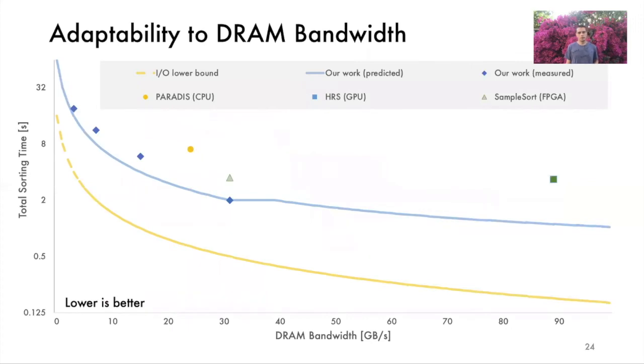Now let's look at DRAM scale and SSD scale optimal bonsai designs. First, consider DRAM scale sorting. This graph shows the sorting time for a 16 gigabyte array as a function of DRAM bandwidth. Lower values are better. The blue line shows bonsai performance predicted by our optimizer. The four blue diamonds show bonsai measured performance. We also include three state-of-the-art sorters on FPGA, GPU and CPU. The yellow line shows the time required to stream the data onto the FPGA and back to DRAM. This yellow line gives an IO lower bound. We see that the three other implementations are optimized to work only with a specific bandwidth. In contrast, Bonsai adapts to different memory bandwidths.